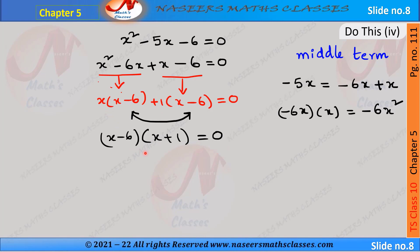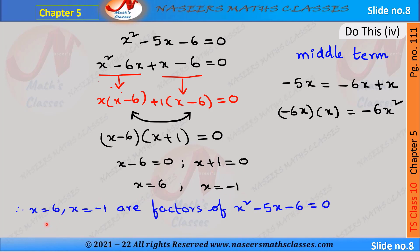In this equation x - 6 is common, so we get (x - 6)(x + 1) = 0. This gives x - 6 = 0 and x + 1 = 0. Transposing, x = 6 and x = -1. Therefore x = 6 and x = -1 are the roots of the quadratic equation x² - 5x - 6 = 0.